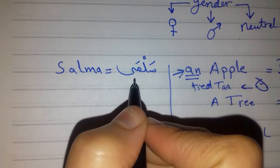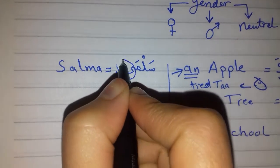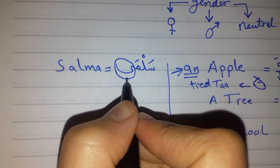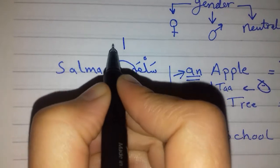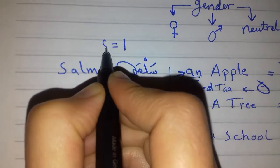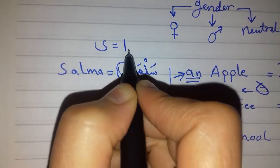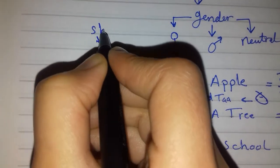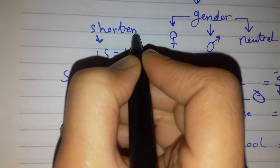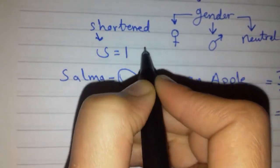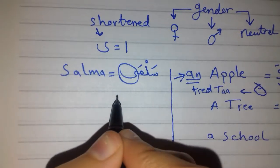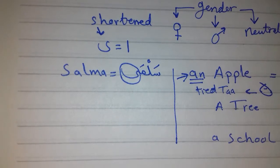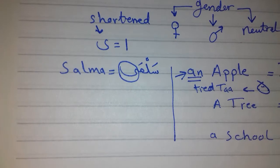This is called al alif al maqsura. I've talked about that before. Alif has another version which is this. This is alif, this is alif, and this is alif. But this alif is called the shortened, shortened alif, because it's not very long. So you don't say Salma, no, you say Salma and just stop right away.